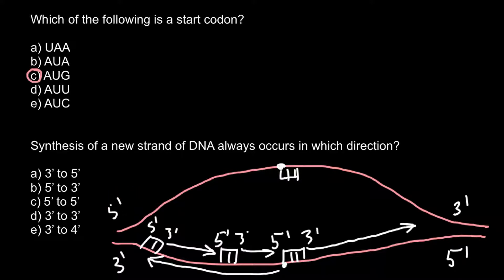So if we have five prime end here on this primer, we would have three prime end here and five prime end here. So from five prime end to three prime end direction, our new strand of the DNA would grow continuously.